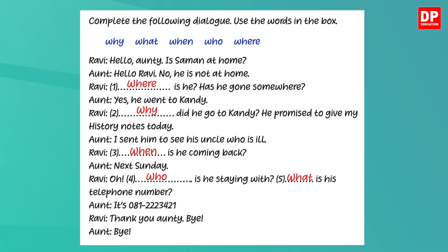Hello auntie, is someone at home? — Hello Ravi, no, he is not at home. — Where is he? Has he gone somewhere? — Yes, he went to Kandy. — Why did he go to Kandy? — He promised to give my history notes today. I sent him to see his uncle who is ill. — When is he coming back? — Next Sunday. — Oh, who is he staying with? What is his telephone number? — It's 081-222-3421. — Thank you auntie. Bye. — Bye.